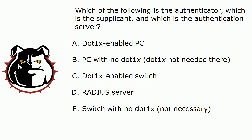In this list, which of these is the authenticator, which is the supplicant, and which is the authentication server when you are configuring .1x authentication? A: a .1x enabled PC. B: a PC with no .1x, because you don't need to put that on the PC. C: a .1x enabled switch. D: the RADIUS server. E: a switch with no .1x, because you don't need it running on the switch.